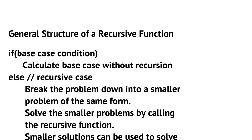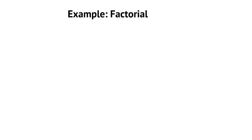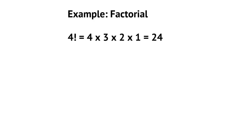Let's take a look at an example where we can use recursion. One of the classic examples is factorial. We can use the recursion strategy to get the factorial of any particular number. So if we say 4 factorial, that means 4 times 3 times 2 times 1, which equals 24.